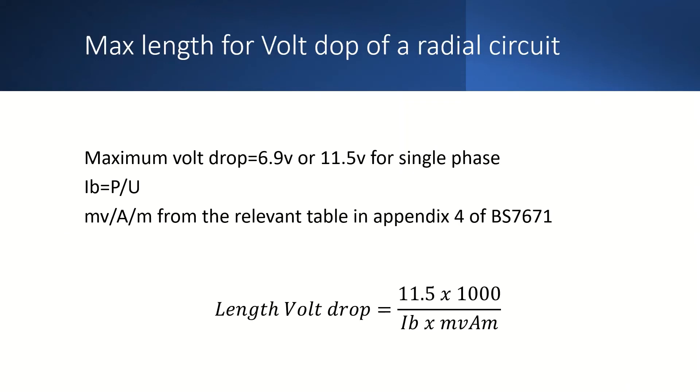So for a radial circuit where we know the loaded watts we can calculate the design current for the circuit and we can find the value for millivolts per ampere per meter in appendix 4 of BS7671 on the table for the relevant type of cable.